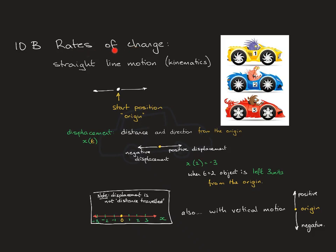In this video I want to look at rates of change, and in particular focus on straight-line motion, or what's called kinematics. Straight-line motion is motion in a straight line — these objects just drive forwards and then reverse back; they don't turn around. Anything to the right-hand side of the start position is considered a positive direction, and anything to the left is a negative direction. We talk about displacement in straight-line motion.